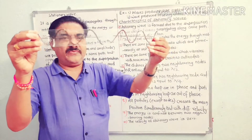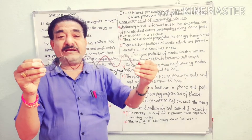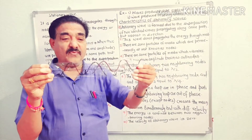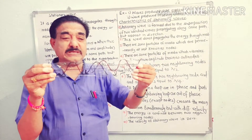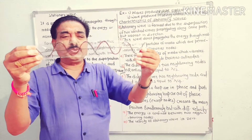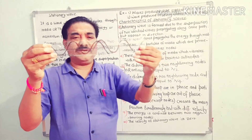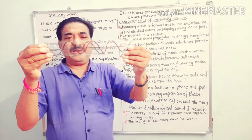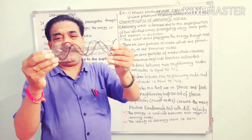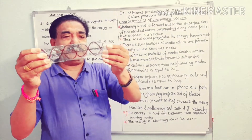In a stationary wave, the two progressive waves are identical — identical in amplitude and frequency of oscillation, time period, and frequency. These two waves travel in opposite directions, and the result of their overlap is the final picture of the stationary wave.